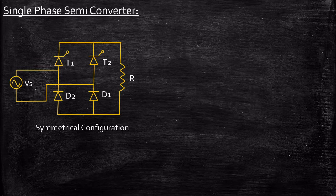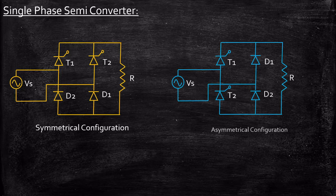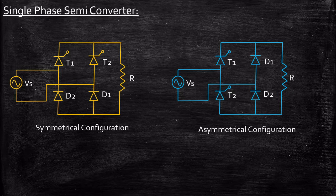This is the circuit diagram of a single-phase semi-converter with R-load, which is called as symmetrical configuration. We also have something called as asymmetrical configuration. Before going into the configuration-related details, what is a semi-converter? Semi-converters are devices where AC to DC conversion is obtained, but the output voltage will always remain in the positive direction — Vout will always remain positive.